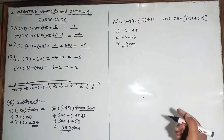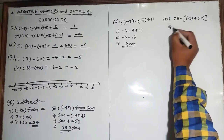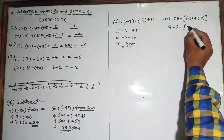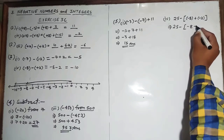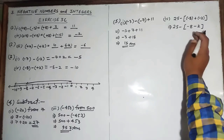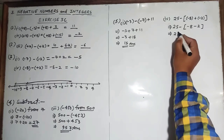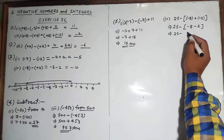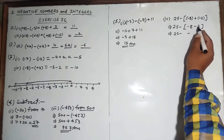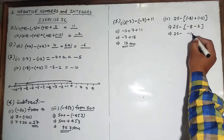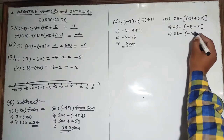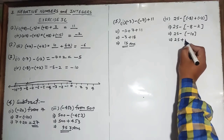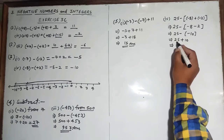Question number five, fourth part: 25 minus bracket minus 8 plus minus 2 bracket close. First we will solve inside the bracket. Minus 8, plus into minus gives minus 2. So it becomes minus 8 minus 2 — both negative — giving minus 10. Now 25 minus minus 10: minus into minus becomes plus 10. So our answer will be 25 plus 10 equals 35.